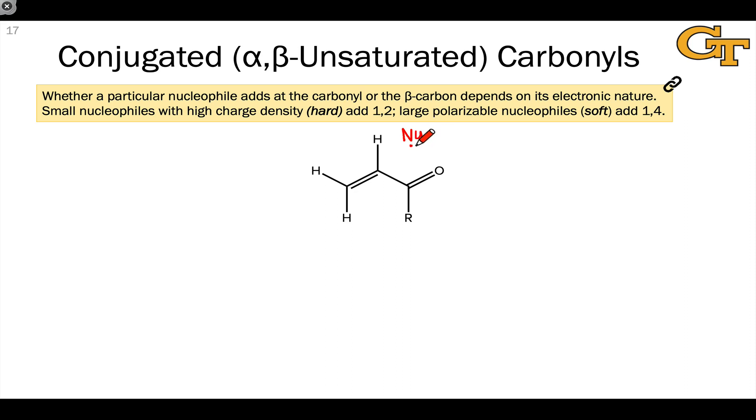Alpha-beta unsaturated carbonyl compounds contain two electrophilic positions: their carbonyl carbons and their beta carbons. Whether a particular nucleophile adds to the carbonyl or the beta carbon depends on its electronic nature.